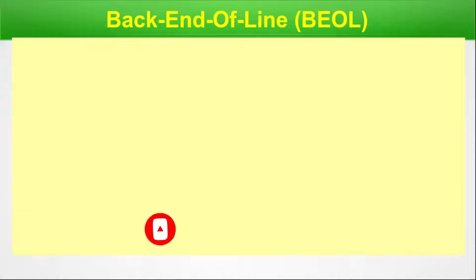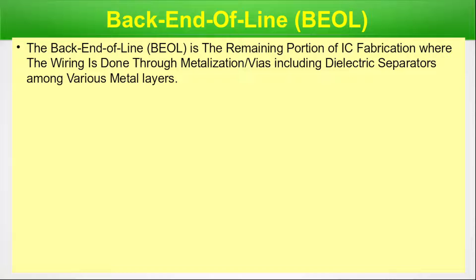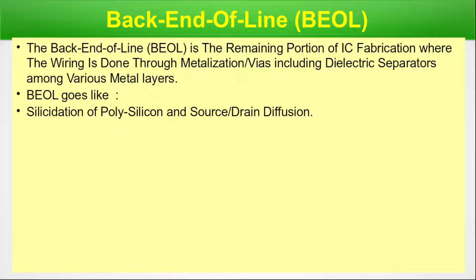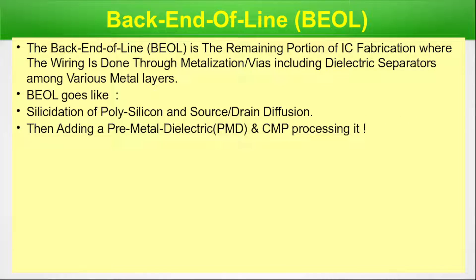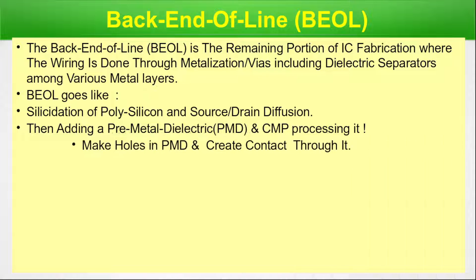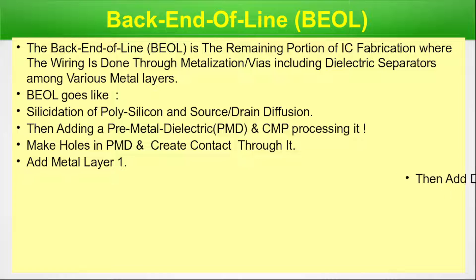Back end of line, BEOL. The back end of line is the remaining portion of the IC fabrication where the wiring is done through metallization or vias, including dielectric separators among various metal layers. It goes like: silicidation of the polysilicon and source drain diffusion, then adding a pre-metal dielectric (PMD) and CMP polishing it, then making holes in the PMD and creating contacts through it, and adding metal layer one.